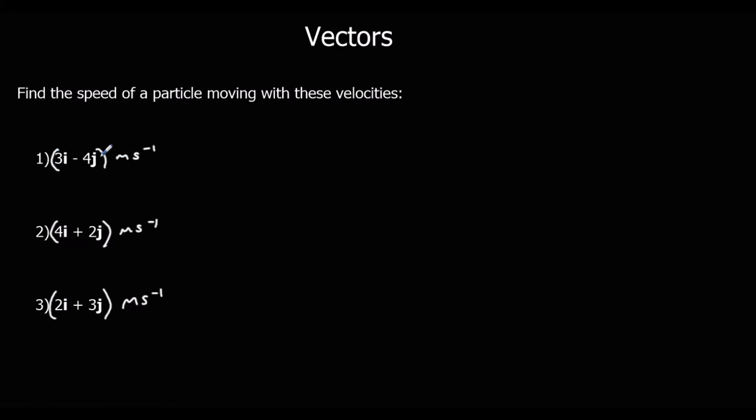What we've been given here are velocities. So 3i - 4j meters per second means it's going along 3, down 4. Every second, he goes along 3, down 4. That's a vector, so velocity is a vector because it's got a magnitude and a direction.